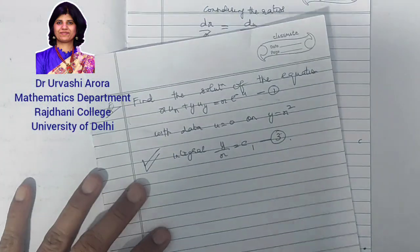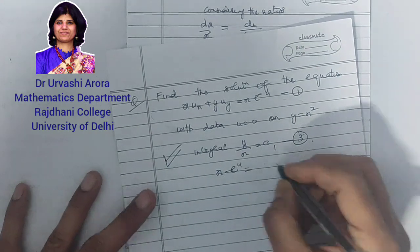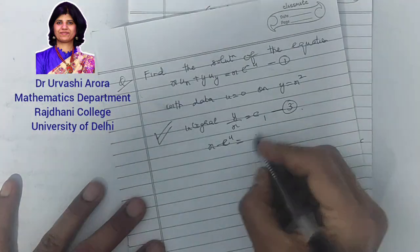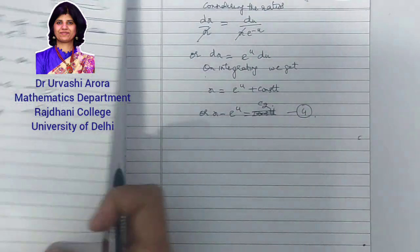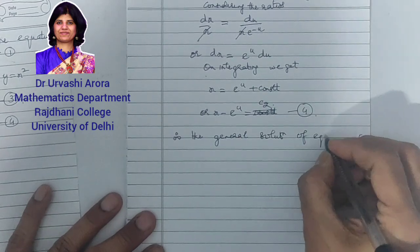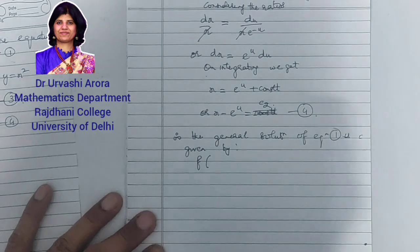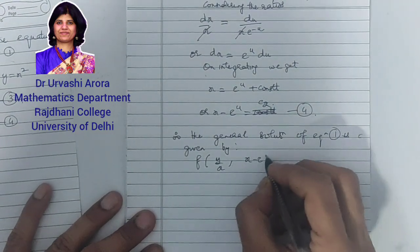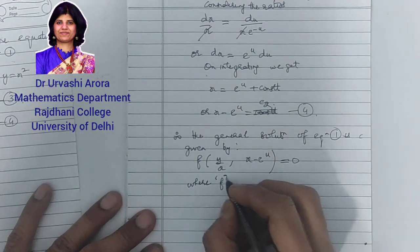This second integral, x − e^u = c₂, is independent of the first integral y/x = c₁. We have obtained two independent integrals. Therefore, the general solution of equation 1 — the given quasi-linear PDE — is: f(y/x, x − e^u) = 0, where f is an arbitrary function.